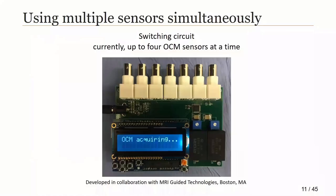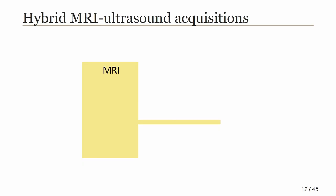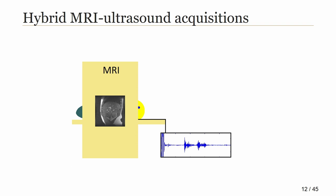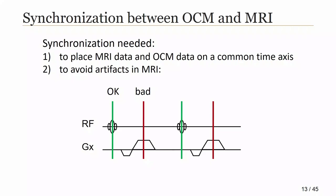We also developed a small circuit that allows up to four of these sensors to be used simultaneously. The general idea is that one or more sensors are applied to a subject or patient and accompany them inside the MR scanner. At that point, we have two streams of simultaneous data coming in — one from MRI and one from ultrasound — meaning we have a hybrid MRI-ultrasound acquisition. We call our sensor OCM, standing for Organ Configuration Motion.